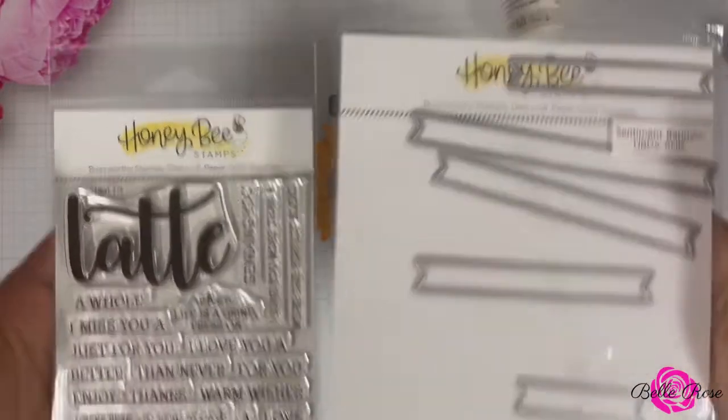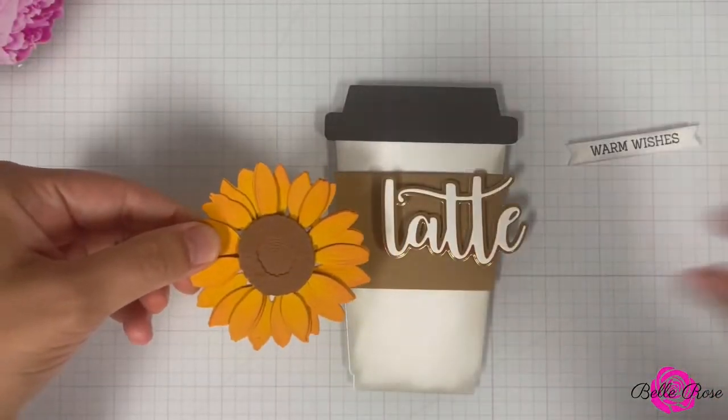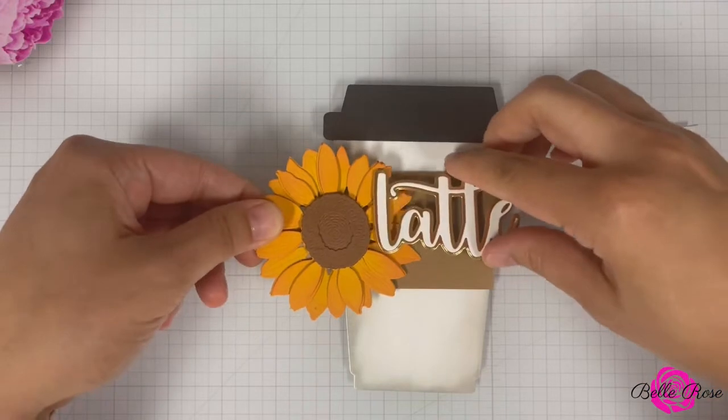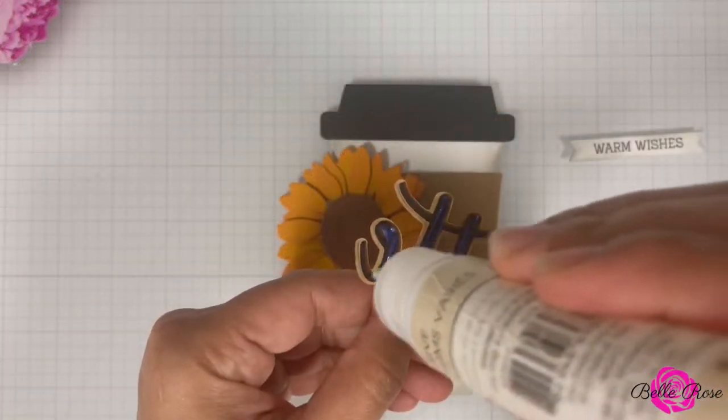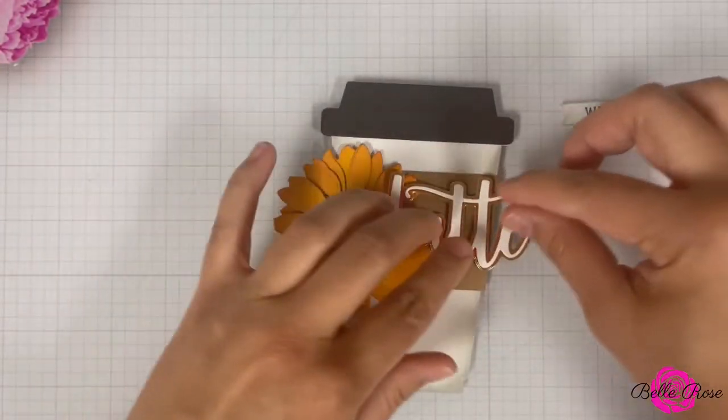I decided to stamp and die cut Warm Wishes off camera. Using adhesive glue, I'm going to adhere the sunflower, the sentiment, and the sentiment banner to the coffee sleeve.